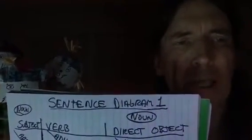Then over here to separate the verb from the direct object, you have a vertical line coming down, but it doesn't go through the horizontal line — it just meets the horizontal line. So: separating subject and verb, the vertical line dissects the horizontal line; separating verb from direct object, the vertical line just goes down to meet the horizontal line.